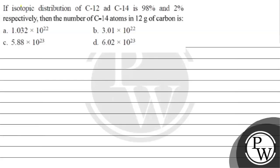Let's read this question. The question says if isotopic distribution of C-12 and C-14 is 98% and 2% respectively, then the number of carbon-14 atoms in 12 grams of carbon is. Options are given to us.